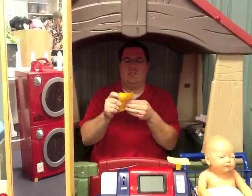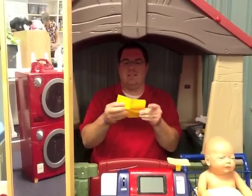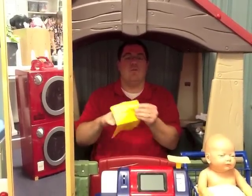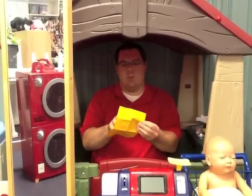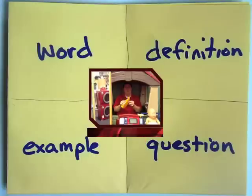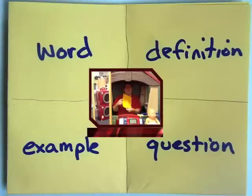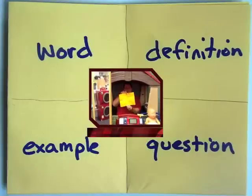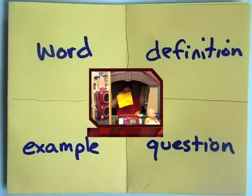So they should look like this. Don't forget to write on your paper unit two, week three. And you have your squares for your words.